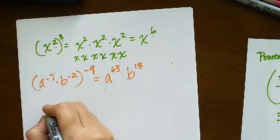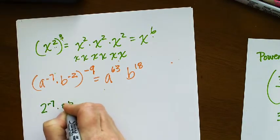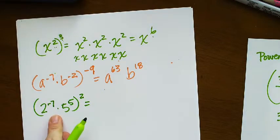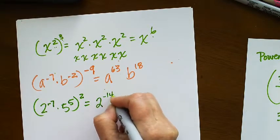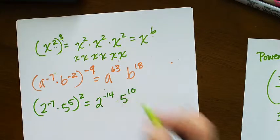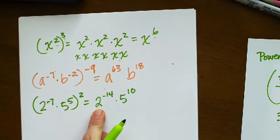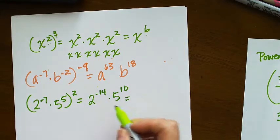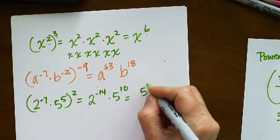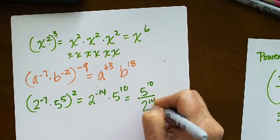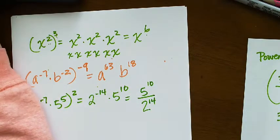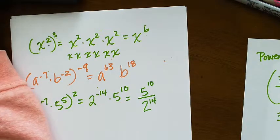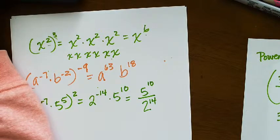Okay, now I have 2 to the negative 7 times 5 to the fifth, kind of the same thing, squared. So I'm just multiplying this by itself. That would be 2 to the negative 14 times 5 to the 10th. Now, I don't think we can type it in like this. I think we need to bring this 2 to the negative 14th and write it without a negative exponent. So that would be 5 to the 10th over 2 to the 14th. It's multiple choice. This was the choice right here.